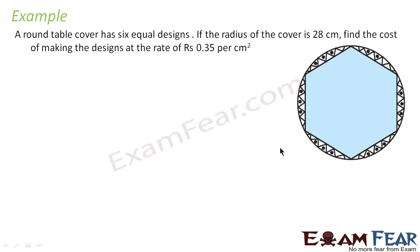Let us take one more example. A round table cover has six equal designs. The radius of the cover is 28 centimeters. We need to find the cost of making the design at the given rate per centimeter square. To find the cost, we first need to find the area of the design.